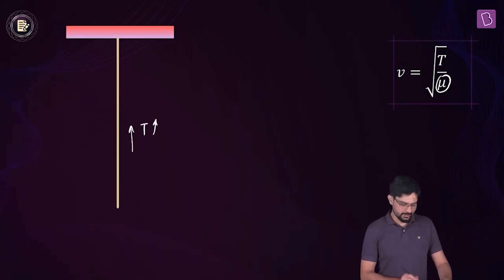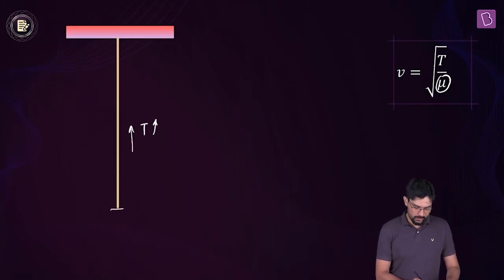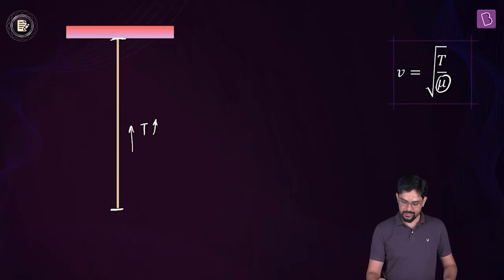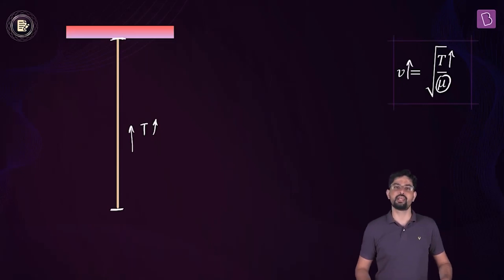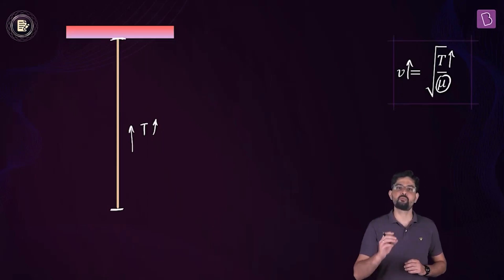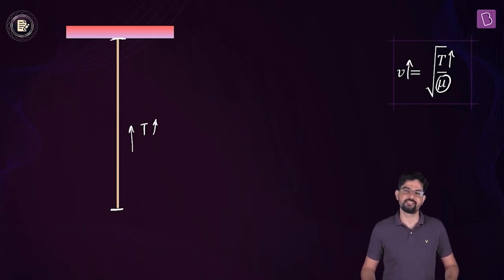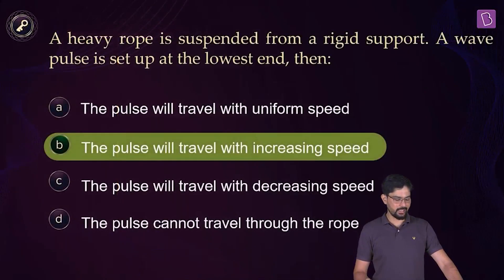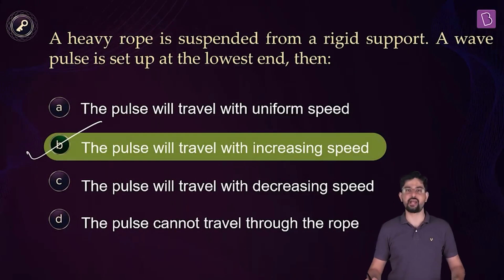Let's take the extreme case. The tension at the lower most end is zero, whereas the tension at the top is equal to the weight of the rope. From here you can see that if the tension keeps on increasing, the wave speed will keep on increasing as the wave goes from the lower most point to the top most point. So the speed will increase and option B is the right answer.